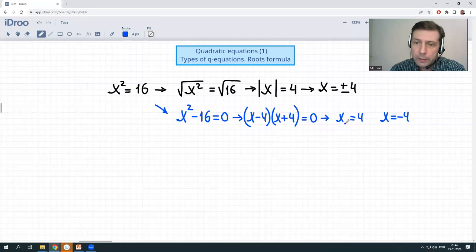In many cases, we write these sub-numbers. x1 or x sub 1 is equal to 4. x sub 2 is equal to negative 4. That's how we could deal with this type, incomplete quadratic equation.